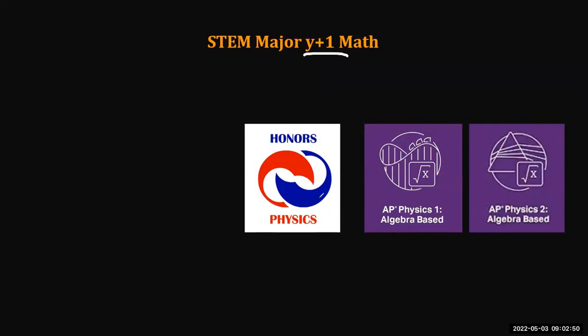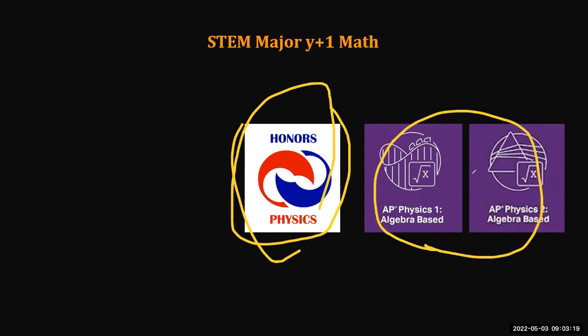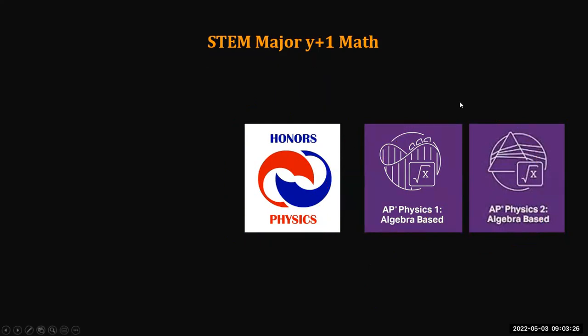And if you have year plus one, this is year plus one math level. Like 11th grade you take honors pre-calculus, and 12th grade you take the calculus courses, A, B, or BC. This I call year plus one math level. If you are at this level and you would like to take honors pre-cal in 11th grade and then algebra-based physics in 12th grade, that is okay. And this is good for some majors in STEM field.